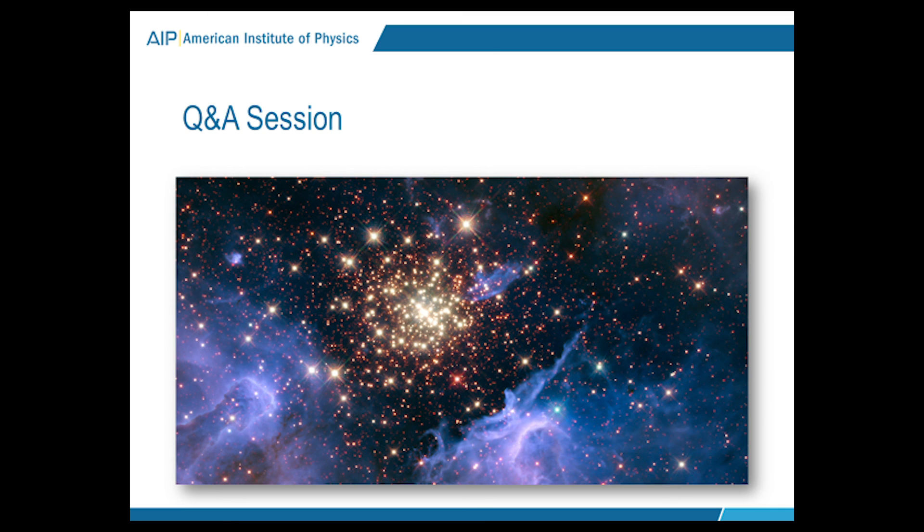Thank you. Our next question, can observations be made simultaneously using more than one of the instruments? Yes. So Hubble has the capability of doing what we call parallel observations. So you can do one observation that you're intending to do with one instrument, but if you happen to be pointing in an interesting direction for some other kind of science, you can do a parallel observation as well.